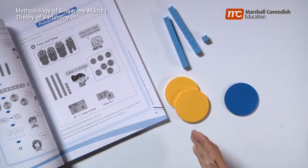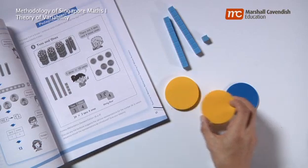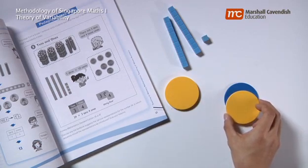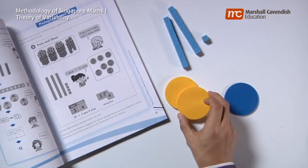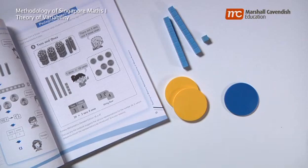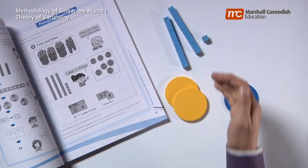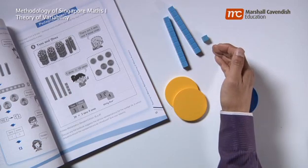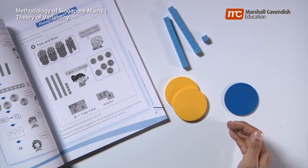Whereas in this, it is not obvious that the 10 is 10 times as much as the 1, because the disks are of the same size. This is an example of perceptual variability, where the same concept is represented by materials which are either easier to perceive as representing 21, or more difficult to perceive as representing 21.